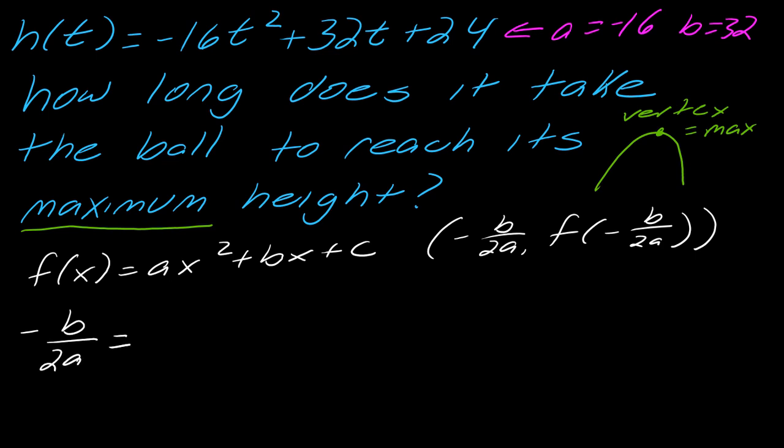Okay, so let's go ahead then and calculate this. What is negative b over 2a? This is negative 32 over 2 times negative 16. So that becomes just 32 over 32, which will equal 1.